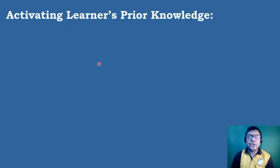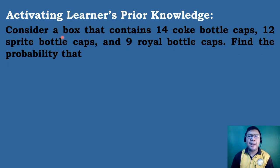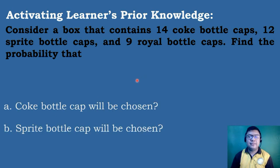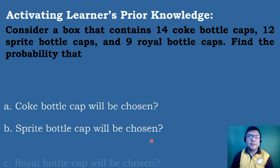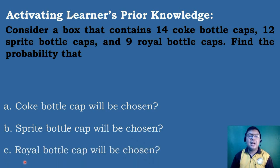Let's start first our discussion with this activity. Consider a box that contains 14 Coke bottle cups, 12 Sprite bottle cups, and 9 Royal bottle cups. Find the probability that: letter A, a Coke bottle cup will be chosen; letter B, a Sprite bottle cup will be chosen; and letter C, a Royal bottle cup will be chosen.